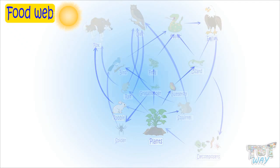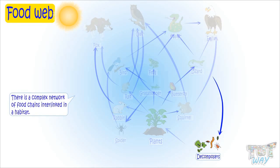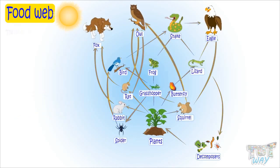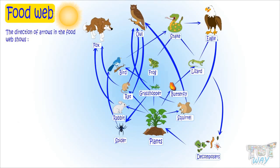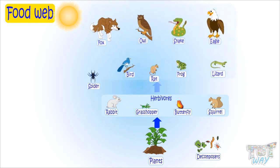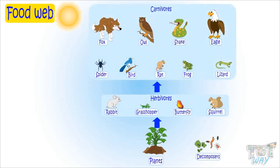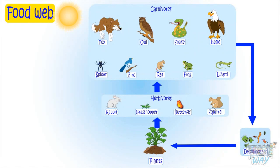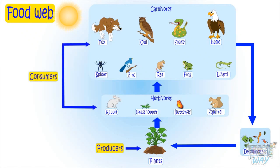And at the end of every food chain there are decomposers. So there is a complex network of food chains interlinked in a habitat. Arrows in a food chain not only show who eats whom, but they also show the direction of flow of energy — from the producers to the herbivores, herbivores to the carnivores, and carnivores to the decomposers. All organisms in a food web are classified as producers, consumers, and decomposers.